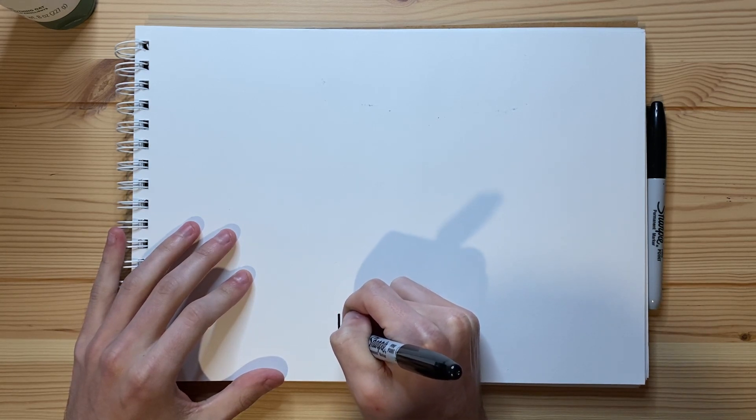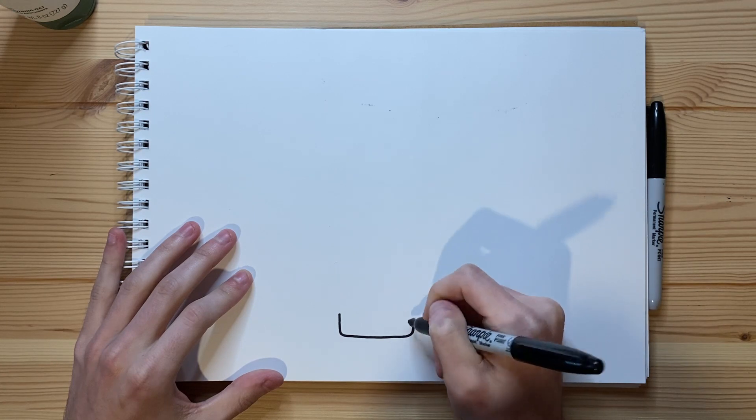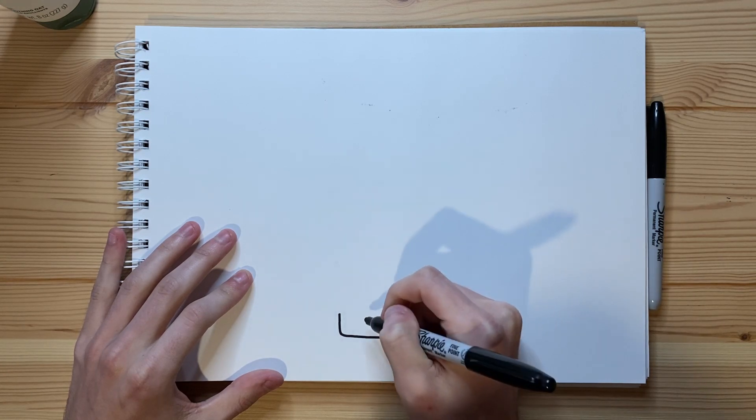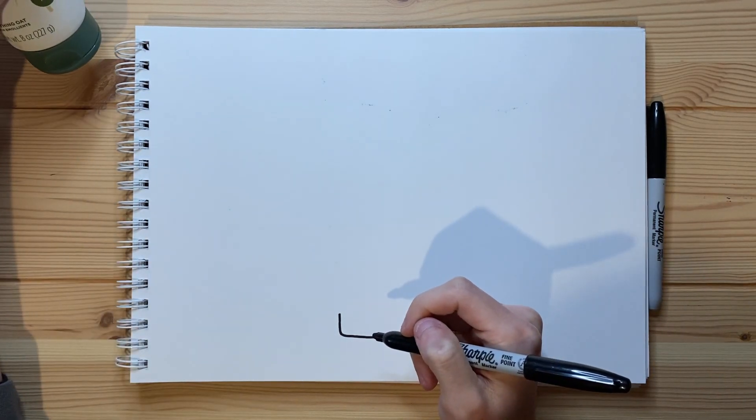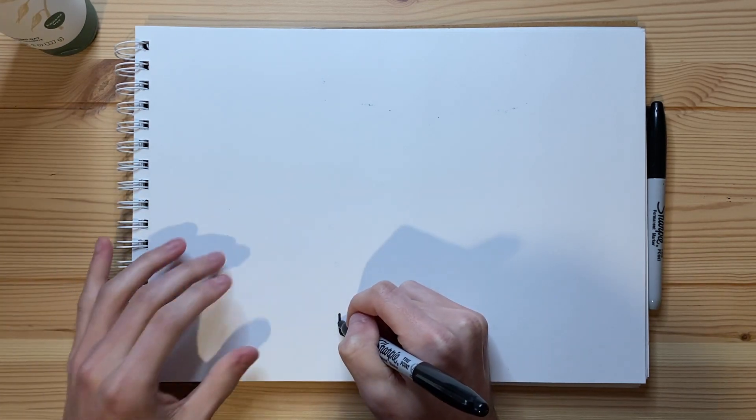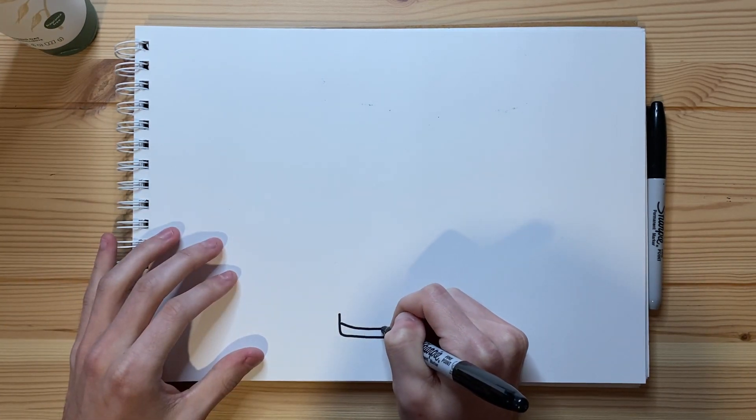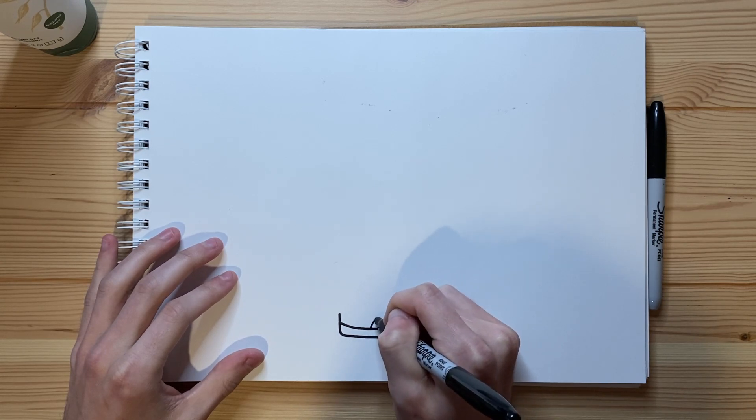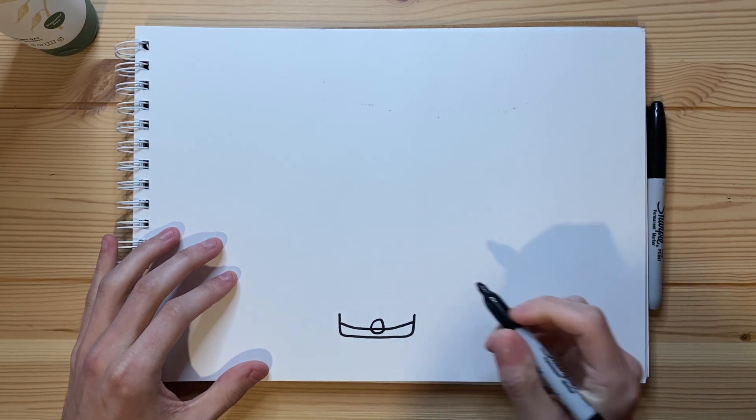So I'm just going to go ahead and have that kind of coming around just like that, just have it going up just a little bit more. I'm going to draw just a little line going like that, and just a little thing like that as well.